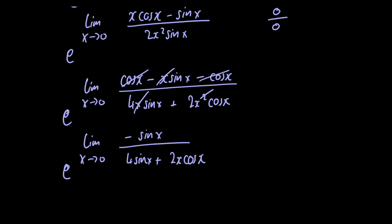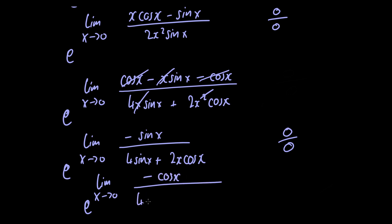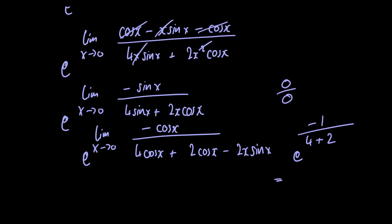So we're left with e raised to the limit as x goes to 0 of minus sin of x divided by 4 times sin of x plus 2x times cosine of x. Now if we were to just let x tend to 0 again, in the numerator we would just have 0 and in the denominator we'd also just have 0. So we can apply L'Hôpital's rule for a third time. We have e raised to the limit as x goes to 0 of minus cosine of x divided by 4 times cosine of x plus 2 times cosine of x minus 2x times sin of x. Now if we just let x tend to 0, we just have e raised to minus 1 divided by 4 plus 2, which is just equal to e raised to minus 1 over 6.